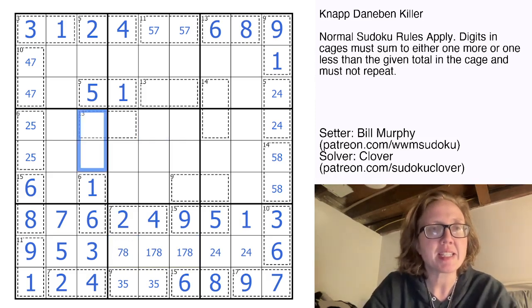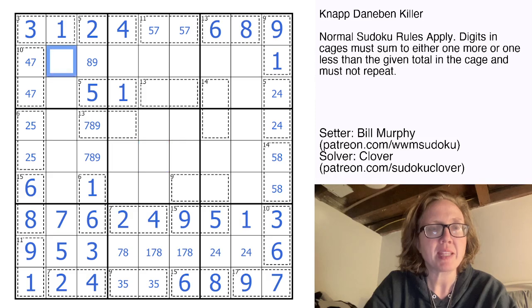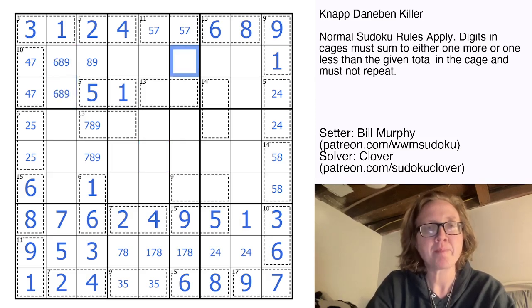Here I need a seven, eight, and nine. That's not going to be a seven. And here in this region, I'm going to need six, eight, and nine.